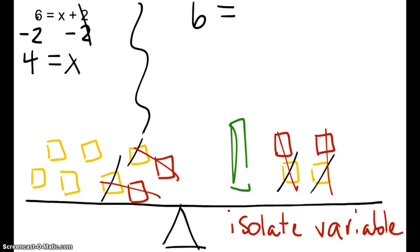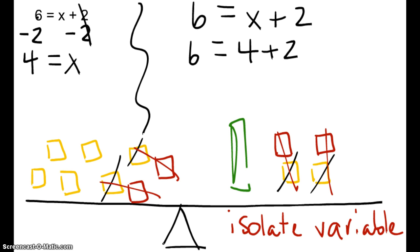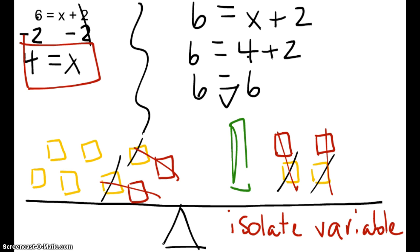So now let's rewrite it. Instead of 6 equals x plus 2, we're going to put in 6 equals 4 plus 2. So 6 equals — what's the value of 4 plus 2? 6. So do I have a balanced scale? Does 6 equal 6? Yes. Now go back and box your answer.